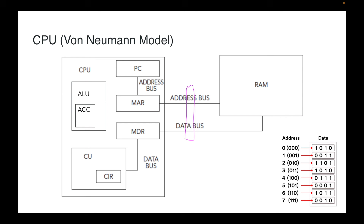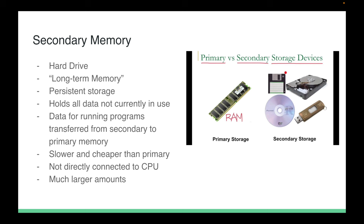Secondary memory is our hard drive — we can think of this as long-term memory. It is considered persistent storage because when you turn your computer off, the data is still there. It holds all the data not currently in use. For example, when you start Microsoft Word, that program gets put into your RAM, but prior to that all its data and code was stored in secondary storage on your hard drive. It is slower and cheaper than primary memory, and not directly connected to the CPU.